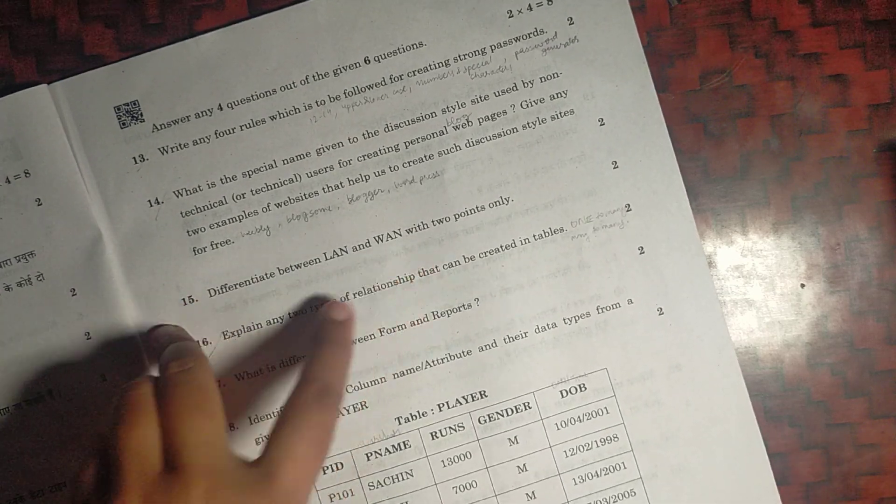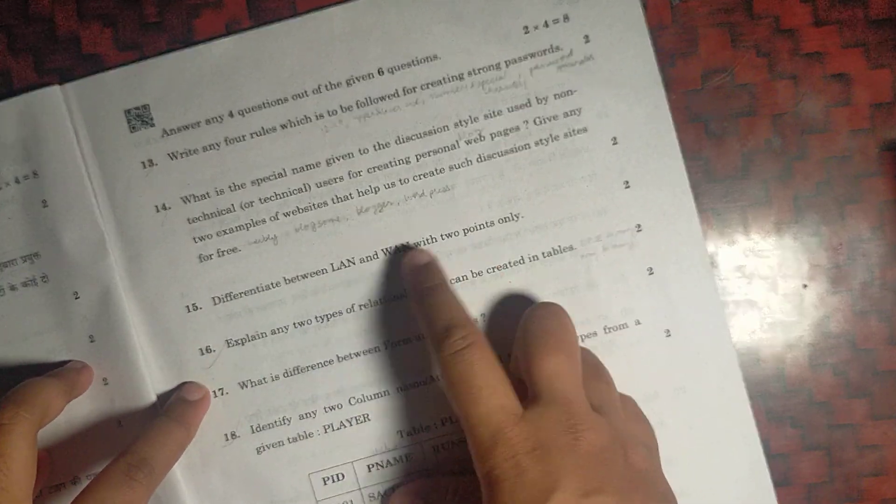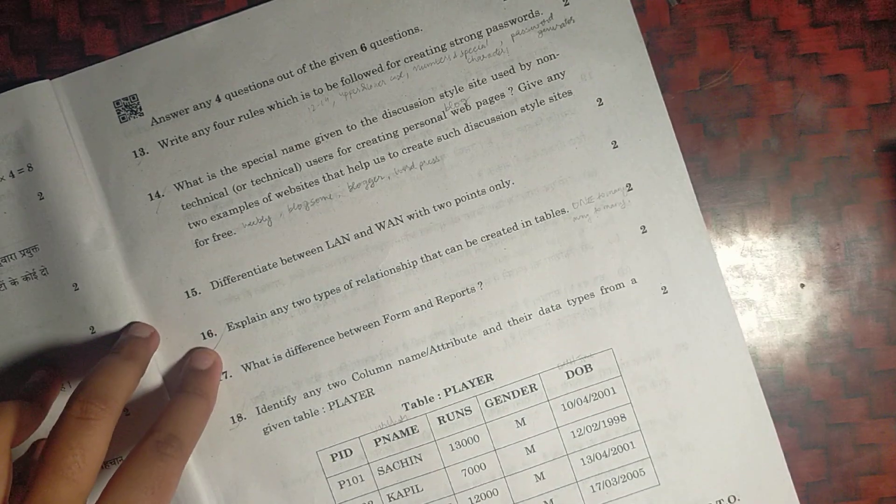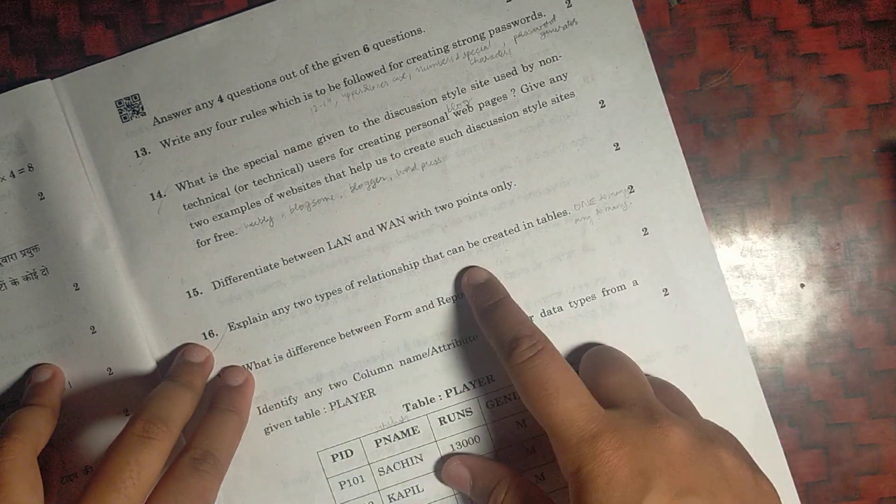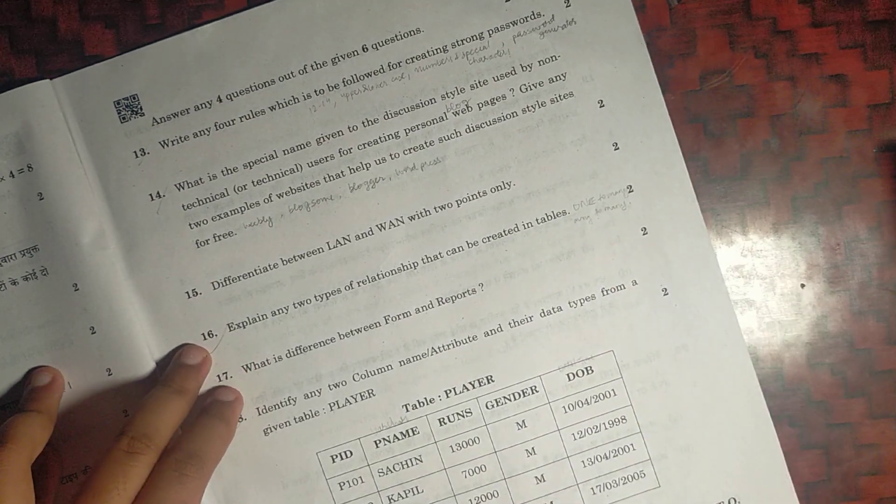Fifteenth, LAN and WAN. We need to write about the geographical area and speed and what places they are used. Sixteenth one, two types of relationships that can be created: one to one, one to many, and many to many. You can explain any two.